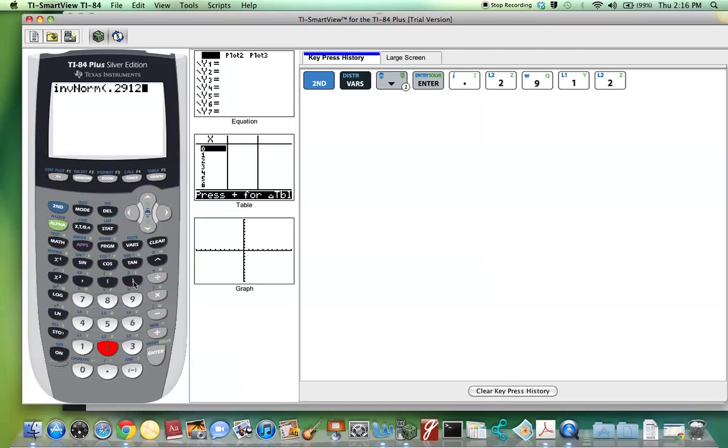Close parentheses. Hit enter. And there we see the z-score, negative 0.55 if you round to two decimal places.